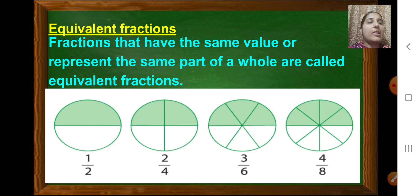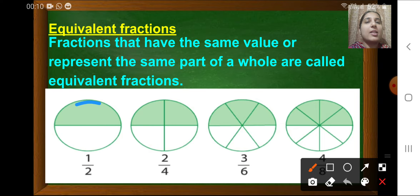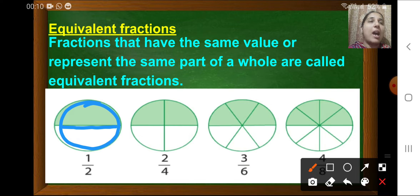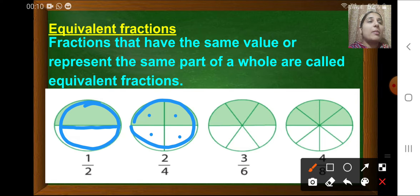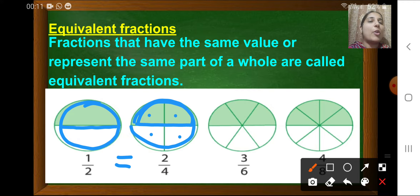In the given figures here, you can see this is a circle — this is a whole — and it has been divided into half. So it is 1 upon 2 of that circle. In the second figure, this circle is being divided into 4 parts, but it is representing the same half part of that whole circle. So 1 upon 2 is equivalent to 2 upon 4, because it is also showing the same part of that circle.